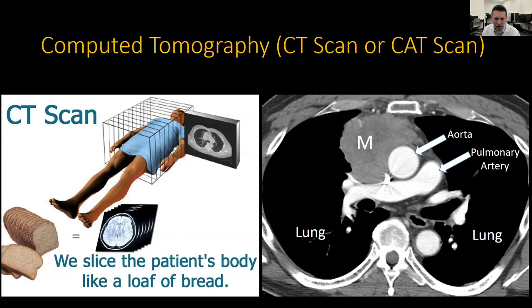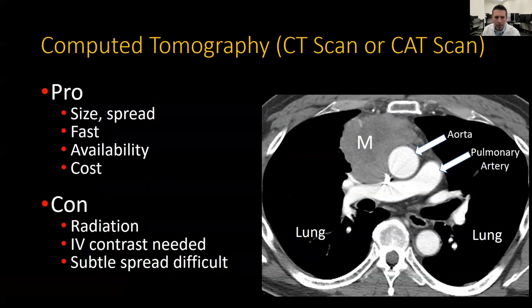The large black areas on each side are the lungs. The pros of CT scans are many. Most importantly, the size of thymic tumors, whether it has spread into local structures — called invasion — or spread to more distant places — called metastasis — can be well evaluated with CT. CT scans are quite fast, only taking a few seconds, and CT scanners are widely available. Compared with other imaging modalities such as MRI or PET-CT, the cost is manageable.